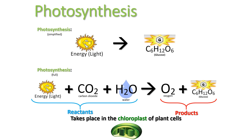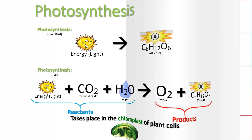This takes place in the chloroplast of plant cells. If you only know one thing about photosynthesis, know this: light plus CO2 plus water makes oxygen and glucose. These are my reactants, these are my products, and it takes place in the chloroplast of plant cells only. The most important thing.